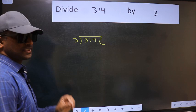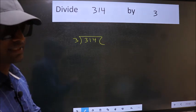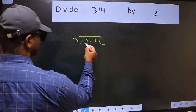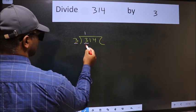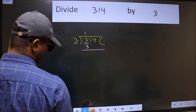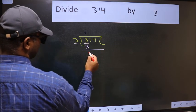This is your step 1. Next, here we have 3 and here also 3. When do we get 3 in the 3 table? 3 once 3. Now we should subtract. We get 0.